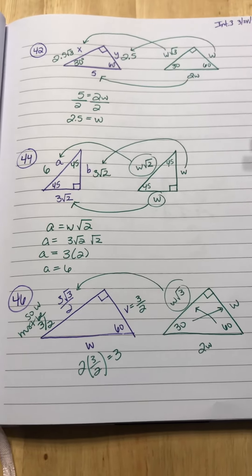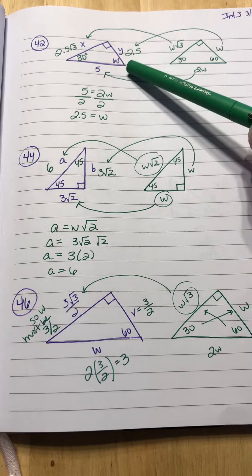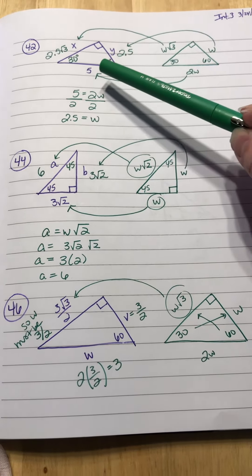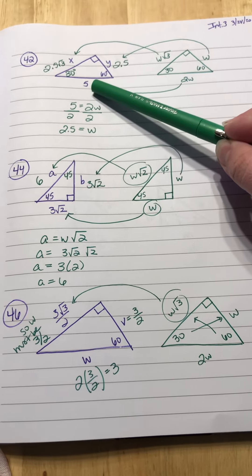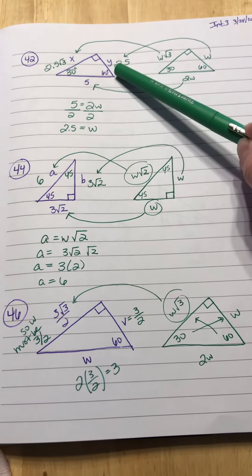If you look at number 42, they give you a 60 degree angle, and they give you 5 for the hypotenuse because it's across from the 90. And you have to figure out what X and Y are.